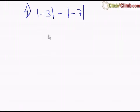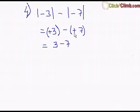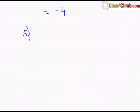Taking another example: negative absolute value of negative 3, minus absolute value of negative 7. The first thing is solving the absolute values. Absolute value of negative 3 is positive 3, then minus, and absolute value of negative 7 is positive 7. We have the difference of 3 and 7. Negative times positive is negative, so the result is negative 4.